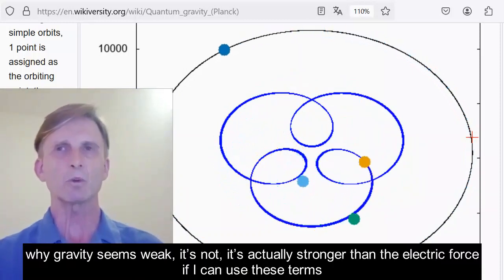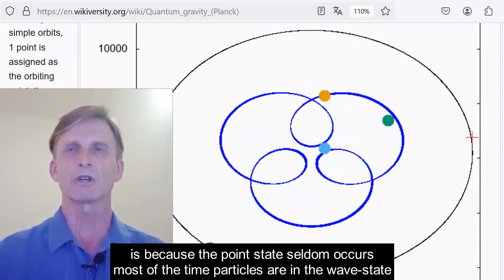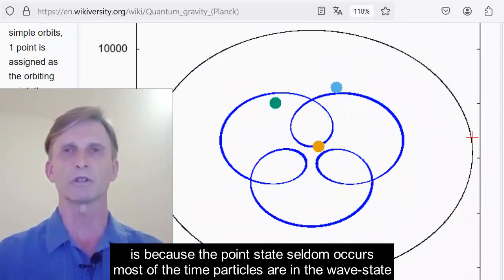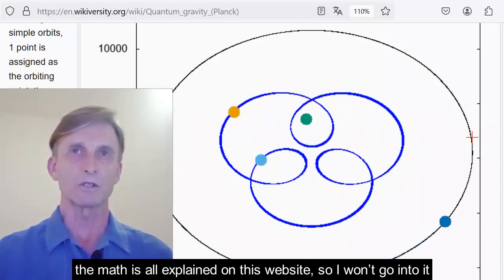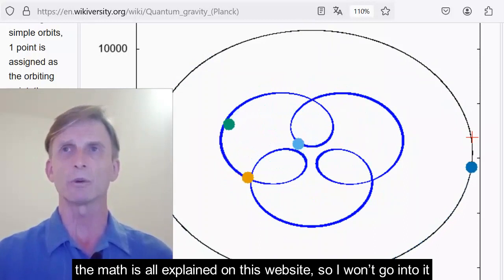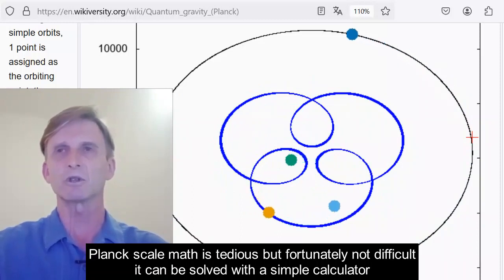Why gravity seems weak, it's not, it's actually stronger than the electric force, if I can use these terms, is because the point state seldom occurs. Most of the time, particles are in the wave state. The math is all explained on this website, so I won't go into it. Particle math, Planck scale math, is tedious, but fortunately not difficult. It can be solved with a simple calculator.